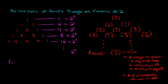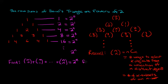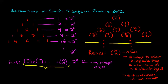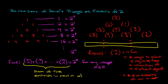The fact that we want to prove is that n choose zero plus n choose one, and keep going until you get to n choose n, is equal to two to the power of n, for any integer n greater than or equal to zero. Notice that the sum on the left-hand side is coming from the nth row of Pascal's Triangle — it's equal to the sum of the entries in row n.